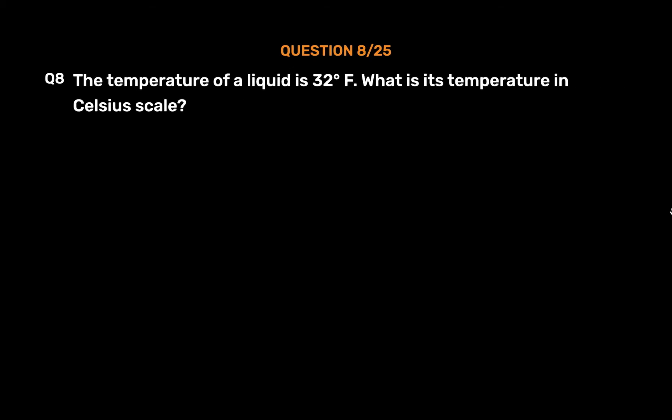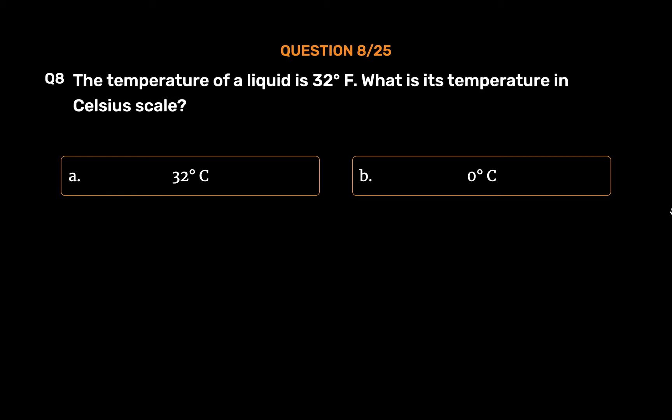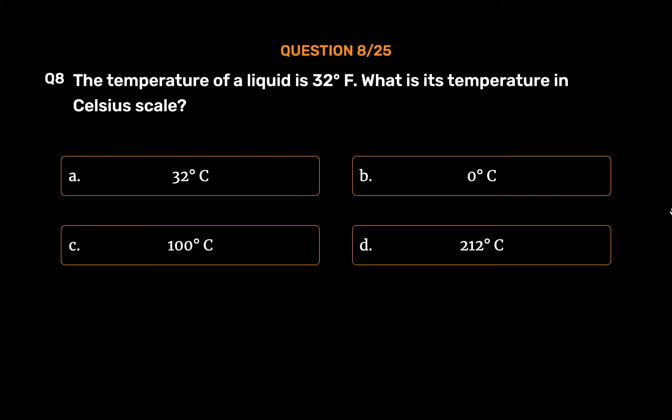Question No. 8. The temperature of a liquid is 32 degrees Fahrenheit. What is its temperature in Celsius scale? Option A: 32 degrees Celsius. Option B: 0 degrees Celsius. Option C: 100 degrees Celsius. Option D: 212 degrees Celsius.